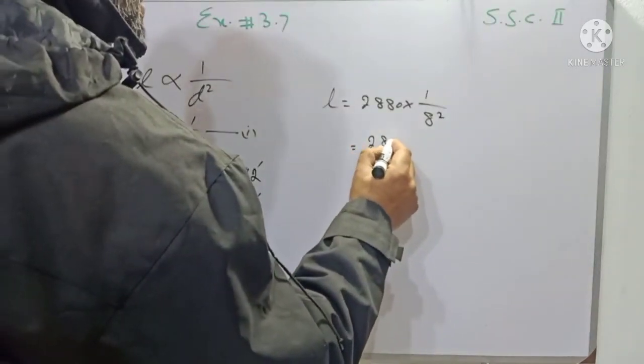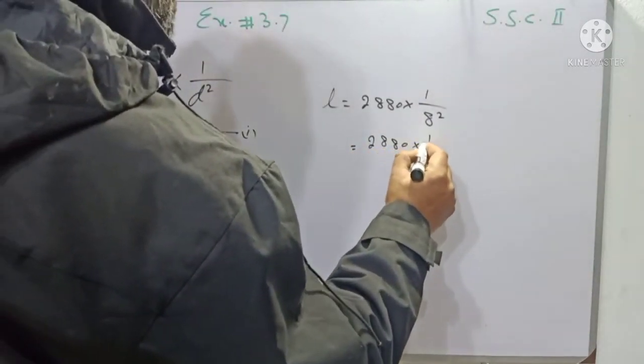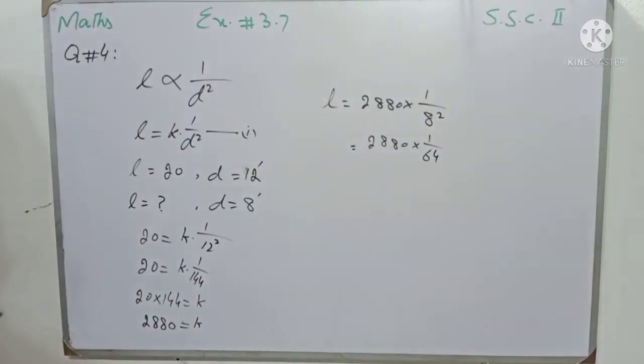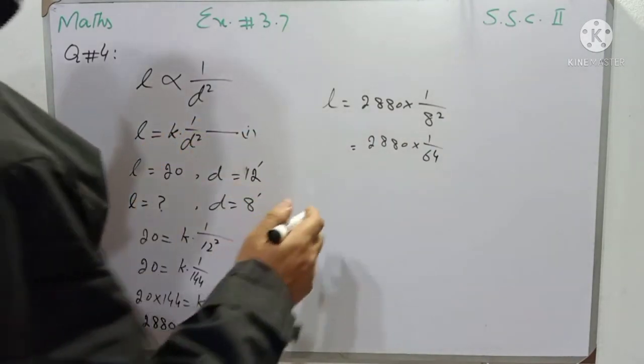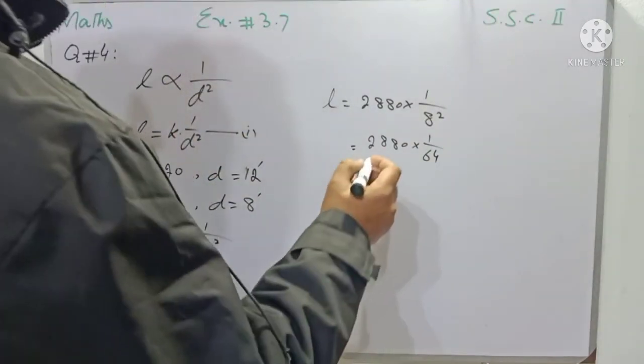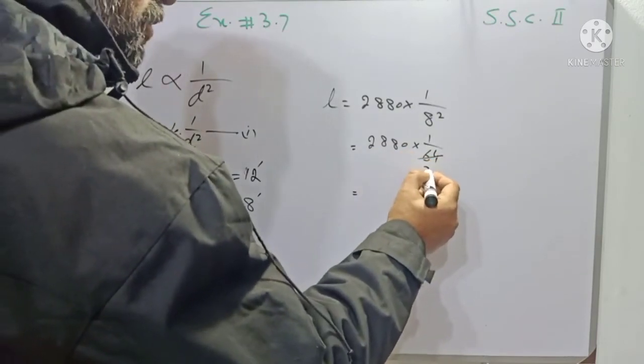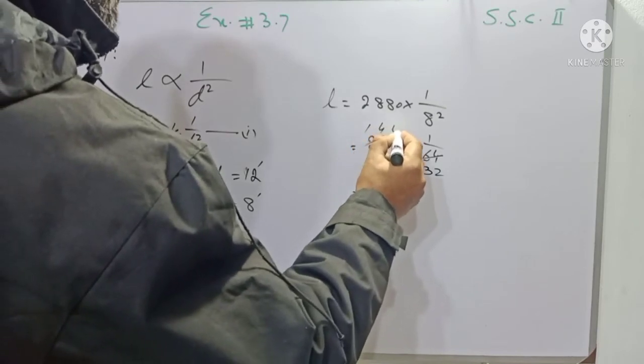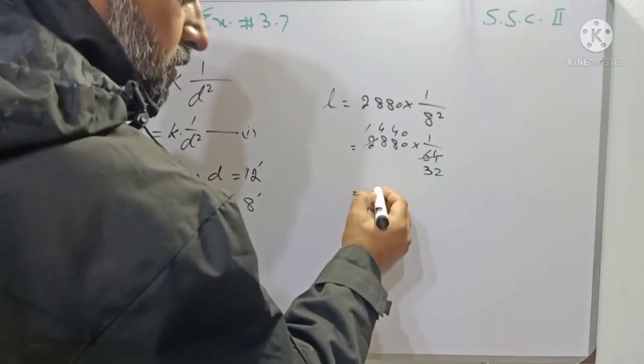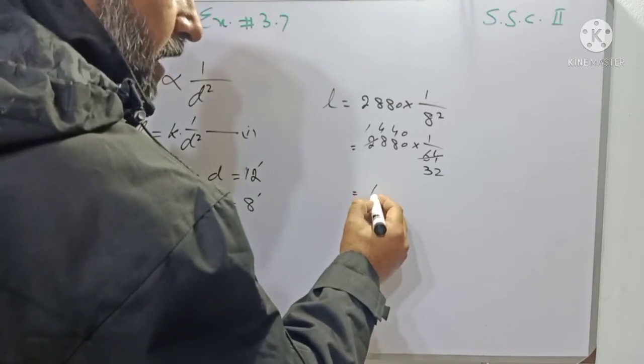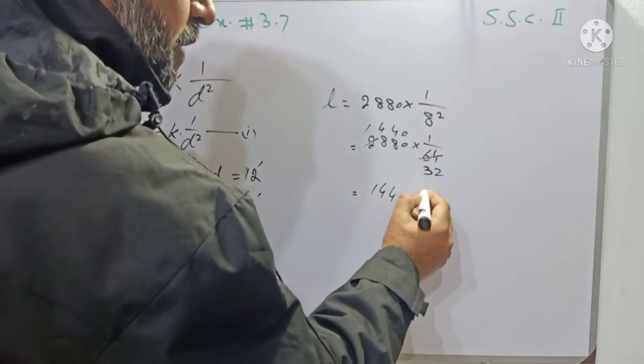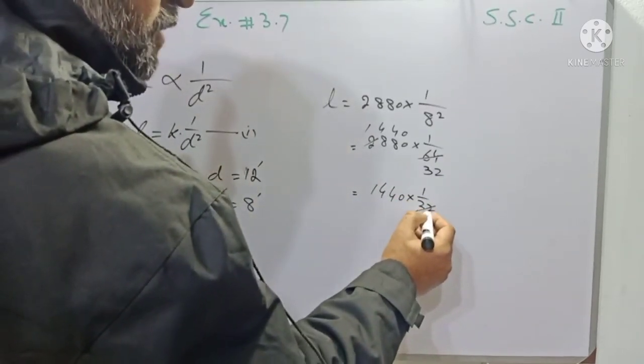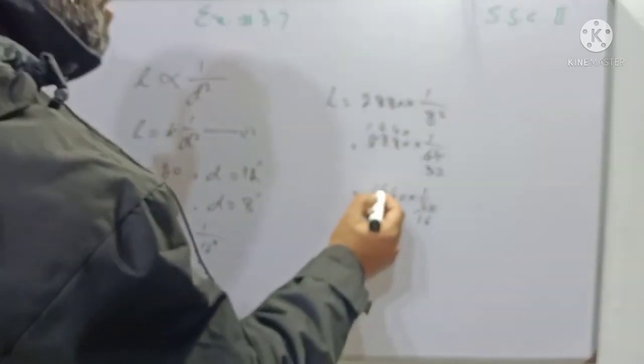2880 multiply by 1 over 8 square means 64, and if you want cancellation then we will do that. So cancellation: 2 into 2880 is 1440, 2 into 64 is 32. Again, 1440 multiply by 1 over 32.